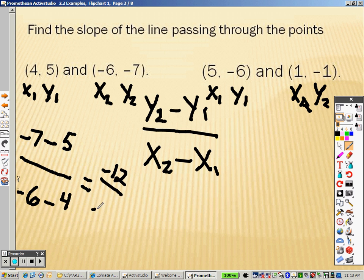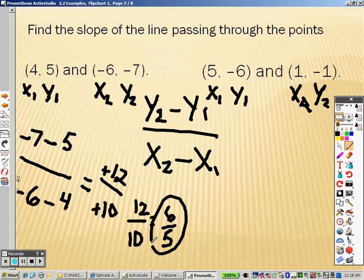Negative 6 minus 4 is negative 10. So the parentheses, or the negatives go, so I have 12 over 10. And I can simplify that by taking a 2 out of both of those to get 6 over 5, because I can divide them both by 2.